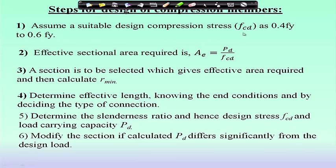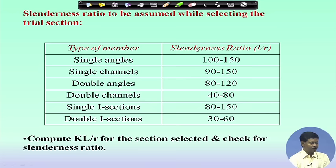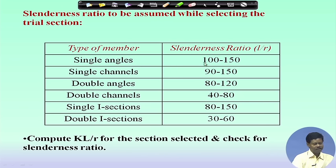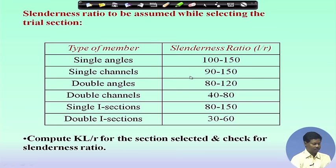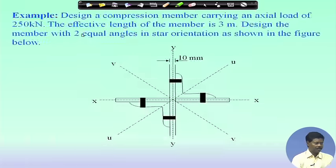Another way is to choose a lambda value instead of Fcd directly. Approximate slenderness ratios are given in a table: for a single angle section, 100 to 150; for a single channel section, 90 to 150; for double angle, 80 to 120; for double channel, 40 to 80; for a single I-section, 80 to 150; and for double I-section, 30 to 60. From this L/r value we can find Fcd from table 9 and then choose a section and iterate. This will be clear through an example.